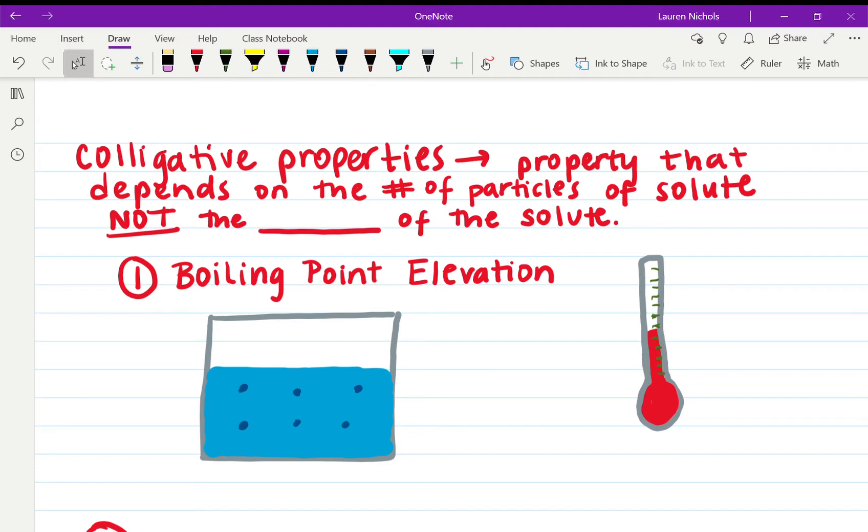With colligative properties, colligative properties are any kind of property that depends on the number of the particles of solute that are actually in the solution and not the identity of the solute. So it doesn't matter which chemicals it is, as long as it's a lot of them.